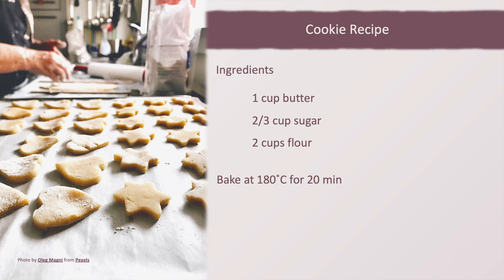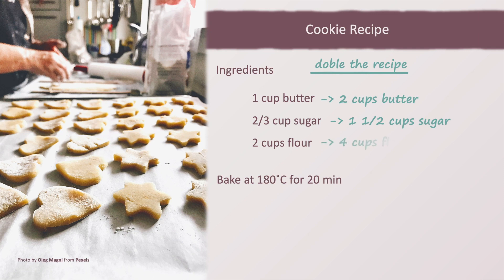However, let's imagine we would like to bake twice the number of cookies, so we need to double the recipe. This way we are going to use 2 cups of butter, 1 and a half cups of sugar and 4 cups of flour, and bake at 360 degrees for 40 minutes. Will it work? Of course not — we cannot double the baking time and temperature. We are going to burn the cookies.